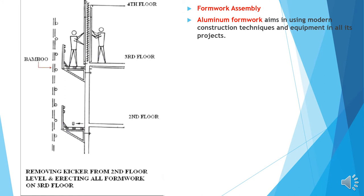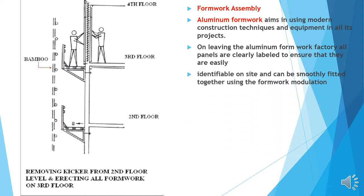Formwork assembly: Aluminum formwork aims in using modern construction techniques and equipments in all projects. On leaving the aluminum formwork factory, all panels are clearly labeled to ensure that they are easily identified on site and can be smoothly fitted together using the formwork modulation. Formwork operation drawing.